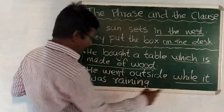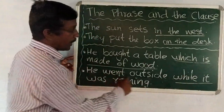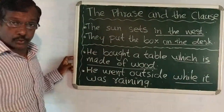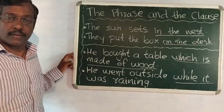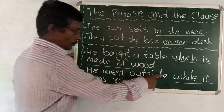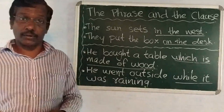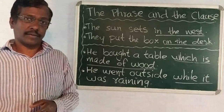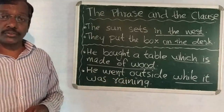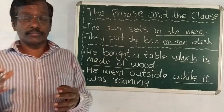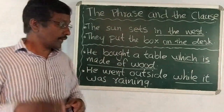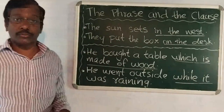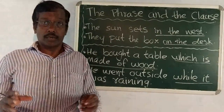One more example: 'He went outside while it was raining.' In this sentence, 'while it was raining' is a group of words. It gives us complete sense, so it is a clause. A phrase is a group of words which gives us sense but not complete sense and cannot stand alone. But a clause is a group of words which gives us complete sense and it will have a subject part and a predicate part.